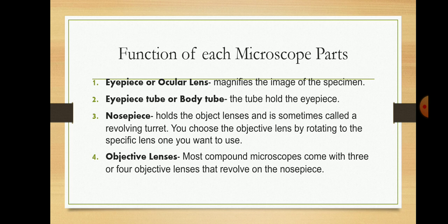Third, the nosepiece. It holds the object lenses and is sometimes called a revolving turret. You choose the objective lens by rotating to the specific lens you want to use.